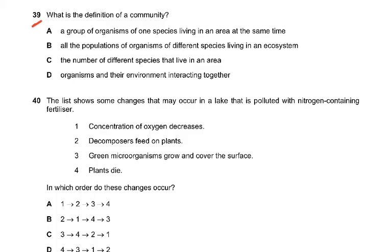Question 39: What is the definition of a community? A community is all the living organisms of all the different species living in an ecosystem. 'Number of different species' is biodiversity. 'Organisms and their environment interacting together' is an ecosystem. 'A group of organisms of one species living in an area at the same time' is a population. Community means all living organisms of all different species — plants and animals — living in a habitat.